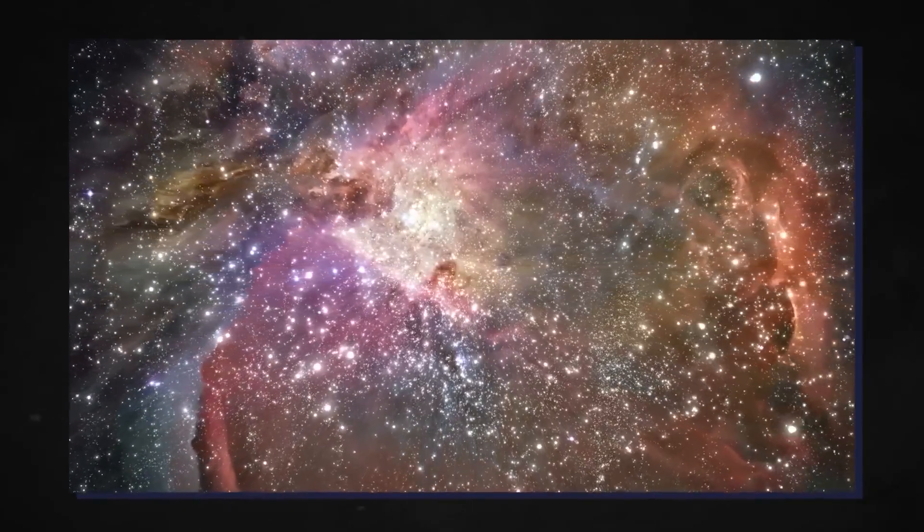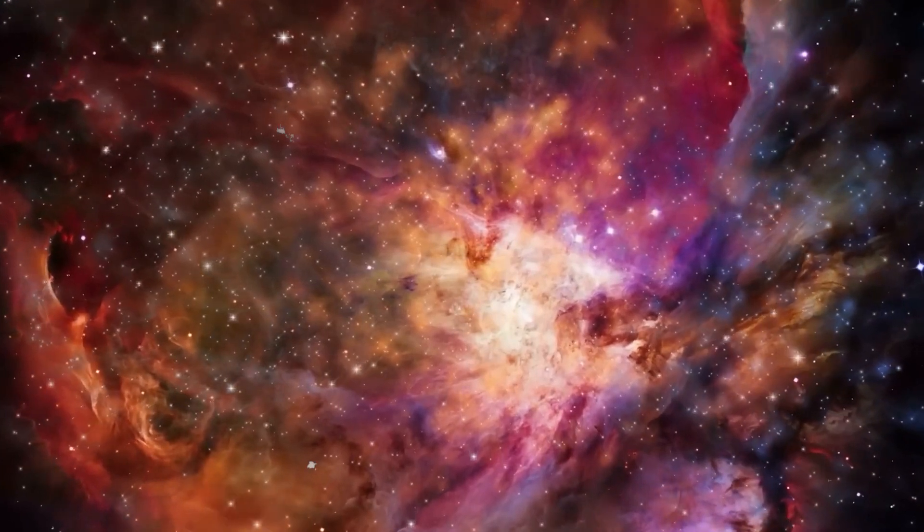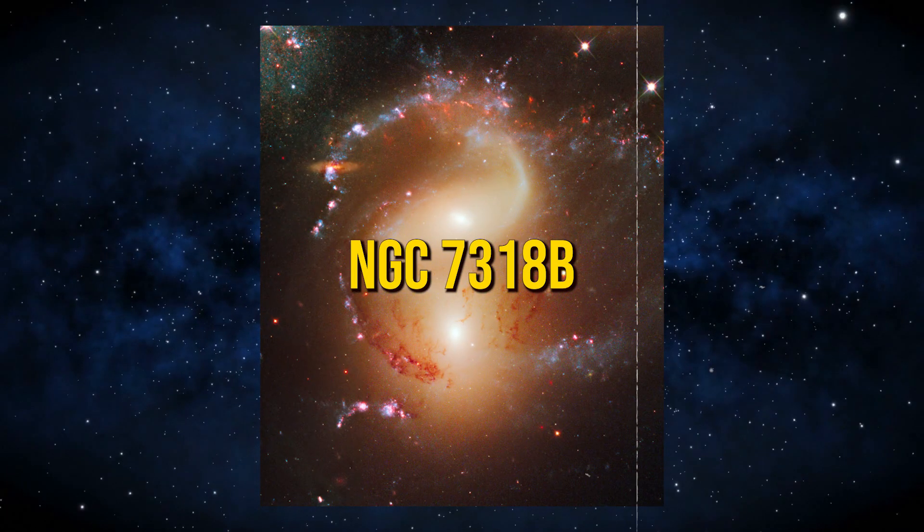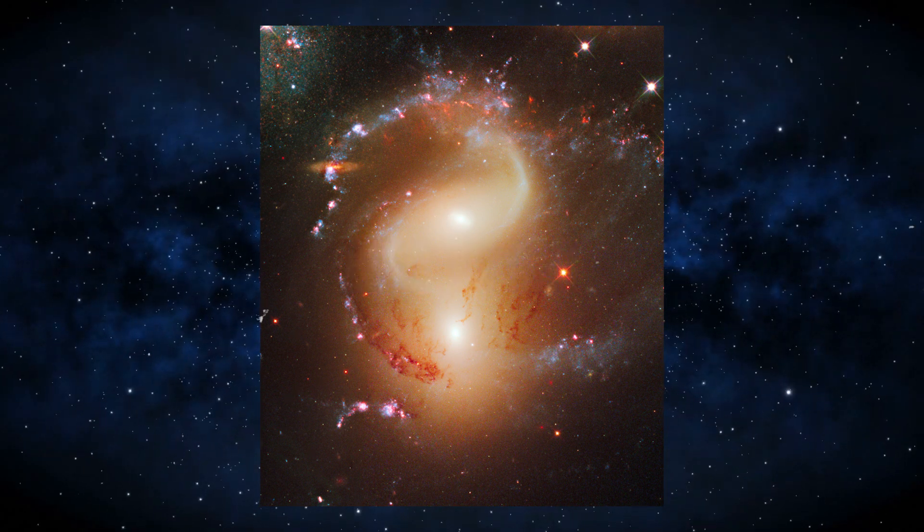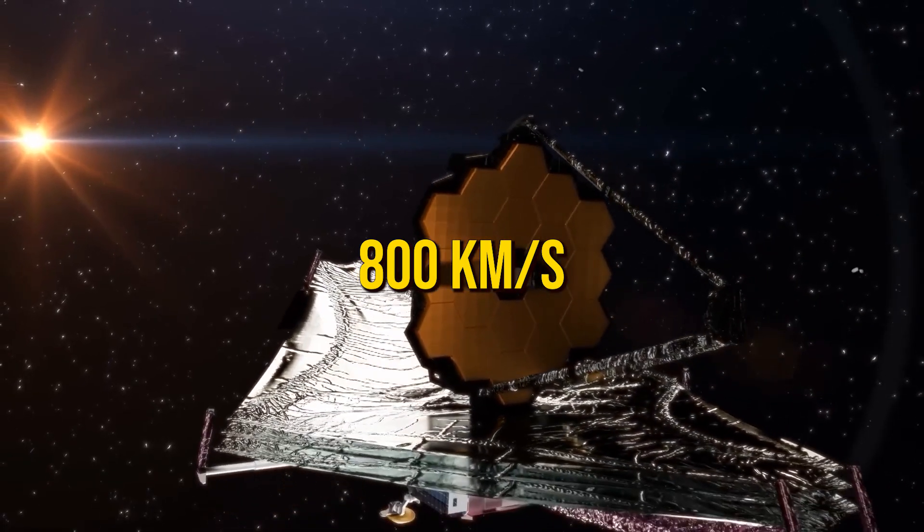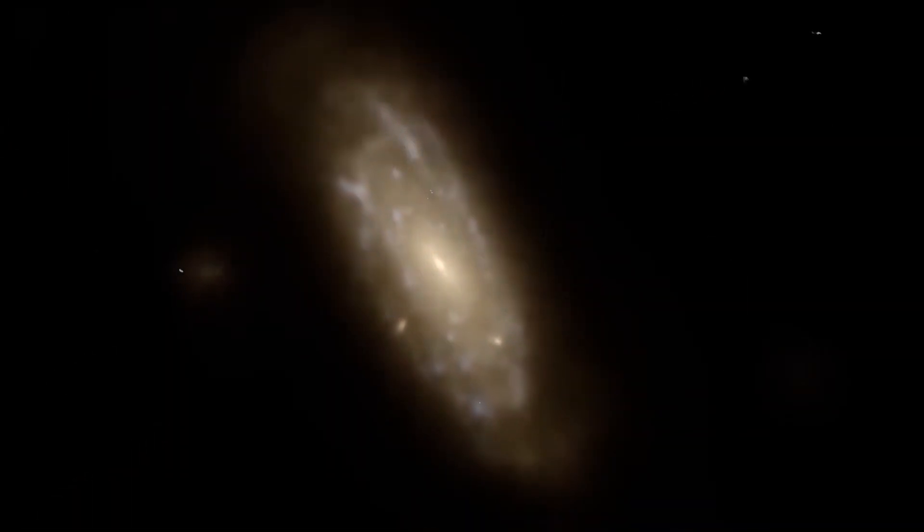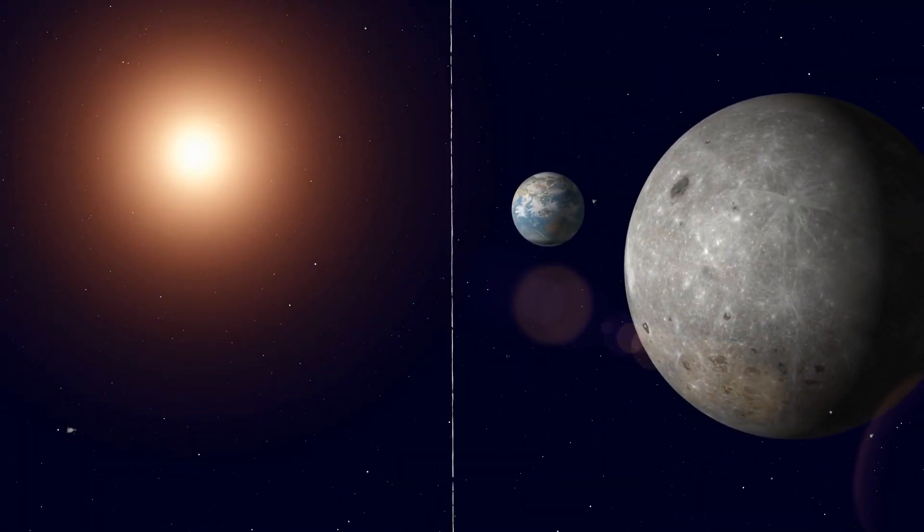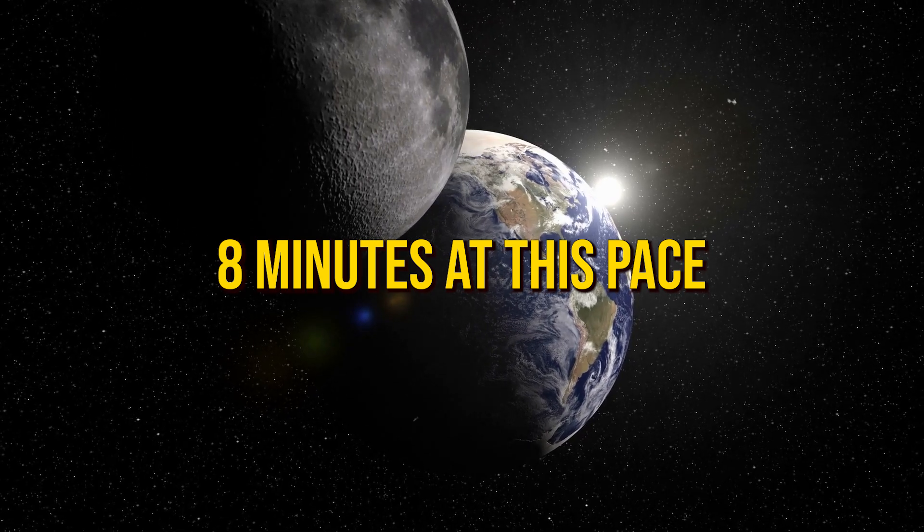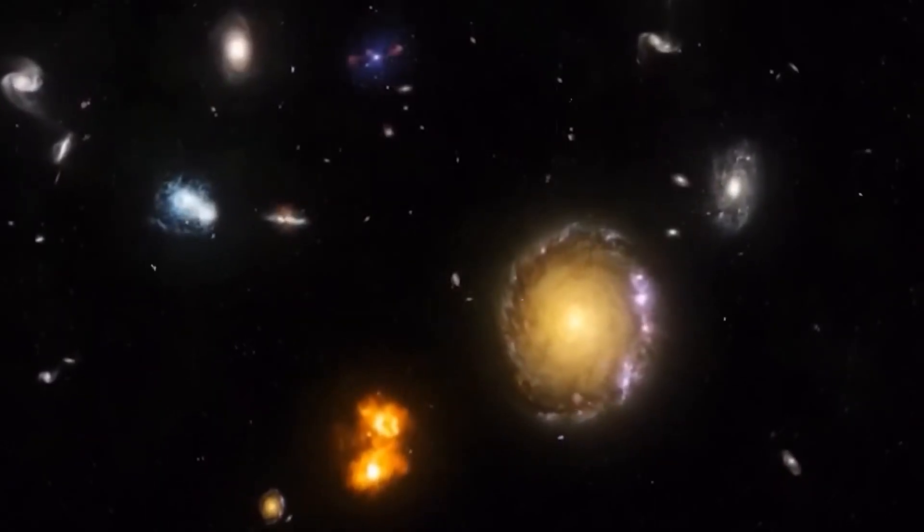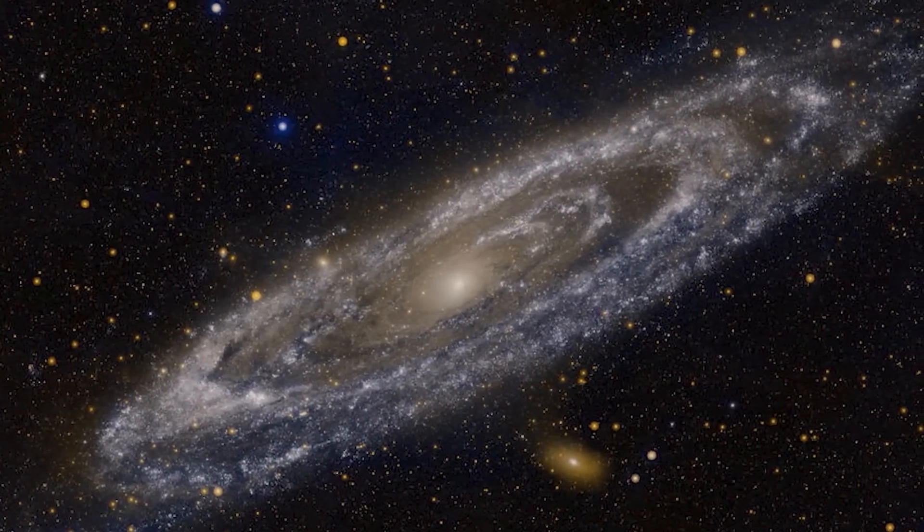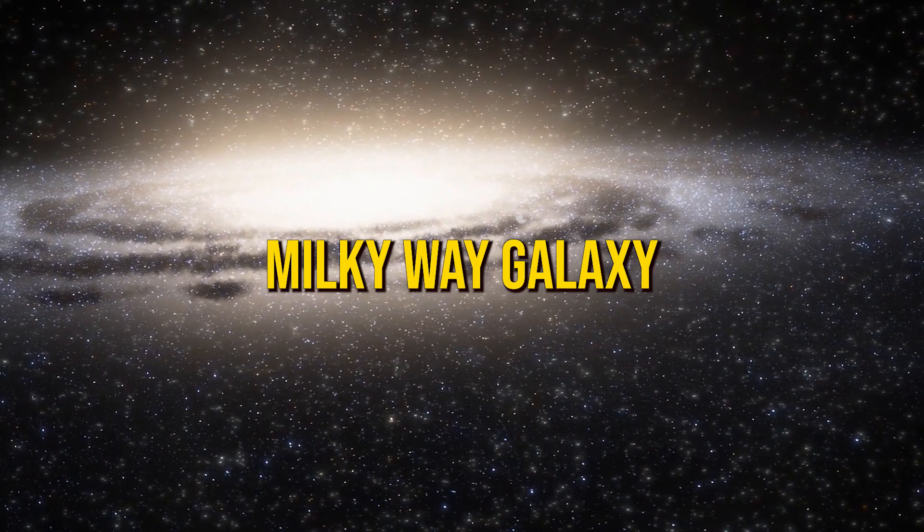Amidst this celestial drama, an intruder emerges. NGC 7318 b hurtling towards Stefan's Quintet at an astonishing speed of about 800 kilometers per second. To grasp the magnitude of this velocity, consider that a journey from Earth to the Moon would take a mere eight minutes at this pace. The collision that follows unleashes a titanic shock wave, dwarfing even the vast expanse of our own Milky Way galaxy.